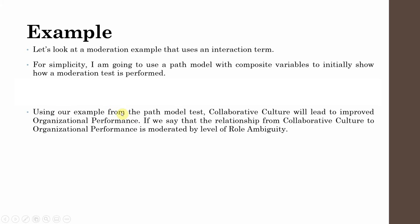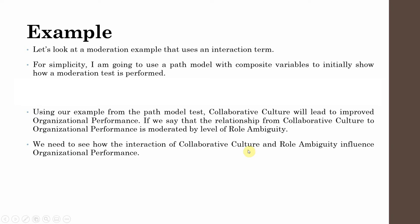For our moderation example using an interaction term, I'll use a path model with composite variables to show how moderation testing is performed. Collaborative culture will lead to improved organizational performance, and the relationship is moderated by the level of role ambiguity. Role ambiguity moderates the positive relationship such that a higher level of role ambiguity will reduce the impact of collaborative culture on organizational performance.